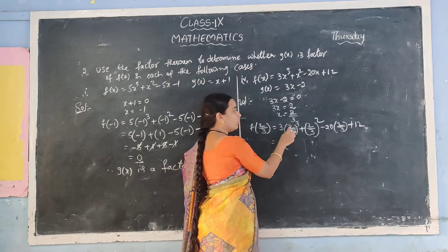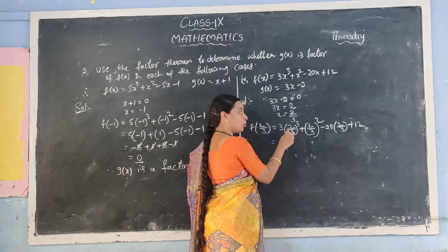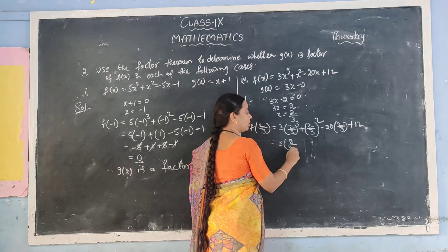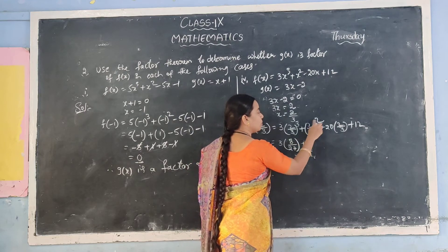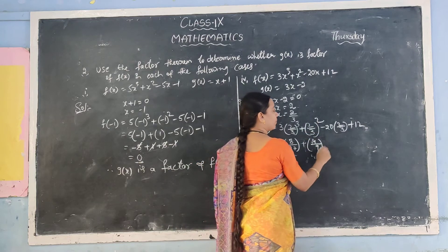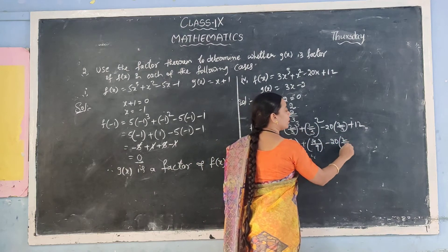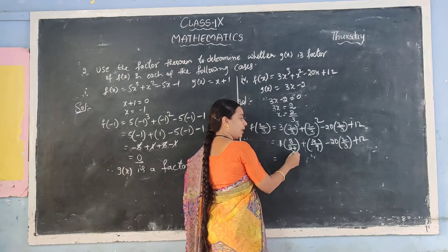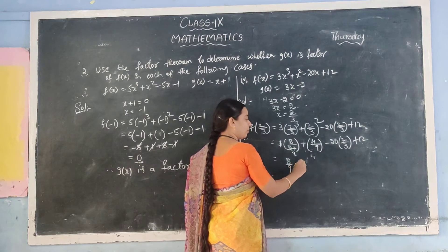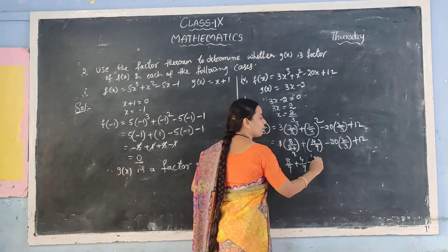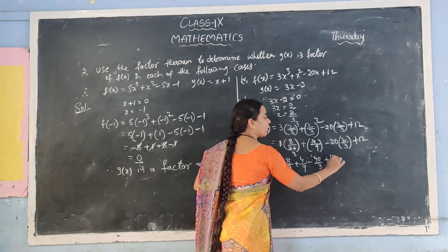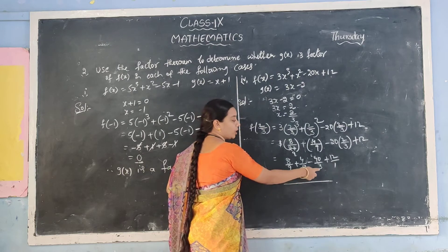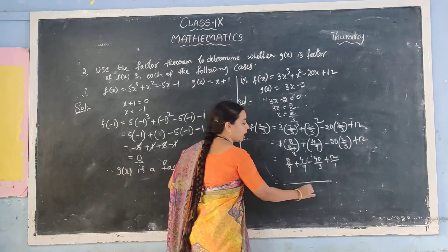Now first of all, the bracket terms: 2 cubed and 3 cubed — numerator and denominator both get the powers. 2 cubed value is 8, 3 cubed value is 27. Now remove brackets and multiply. Here 3 and 9 cancel. 8 by 9 plus 4 by 9 minus 40 by 3 plus 12. Now we have to find the LCM. All the denominators are factors of 3 only; the highest factor is 9. So LCM is 9.